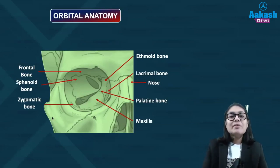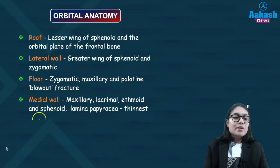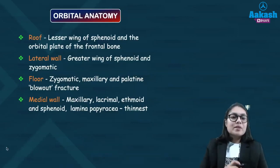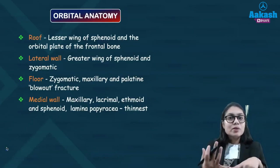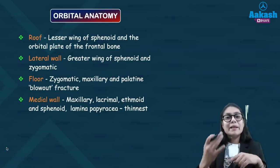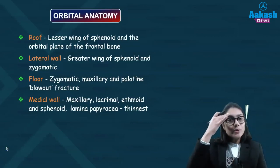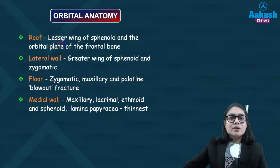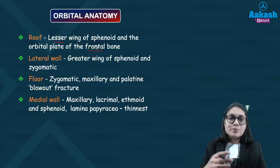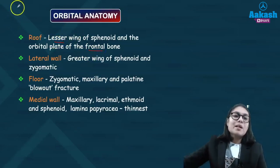So let's begin with the walls of the orbit. The first one is your roof. The roof is formed by the orbital plate of the frontal bone and the lesser wing of sphenoid. So these are the two bones that are going to form the roof. You are supposed to know all these bones because they can be asked in MCQ.